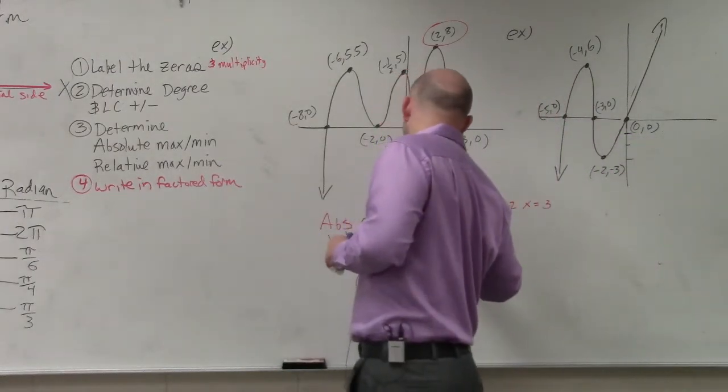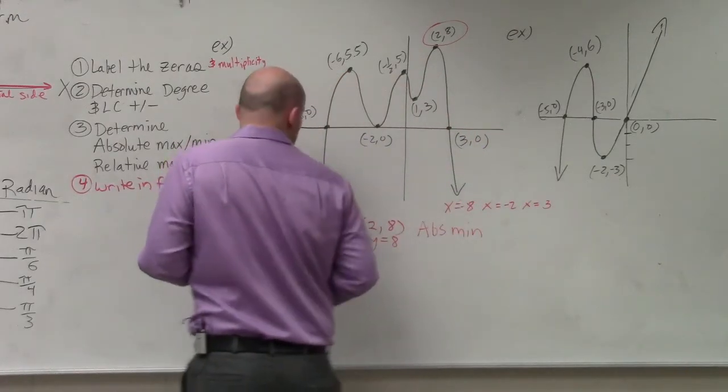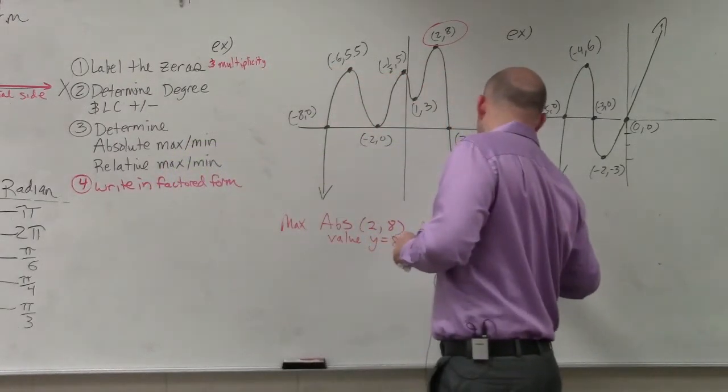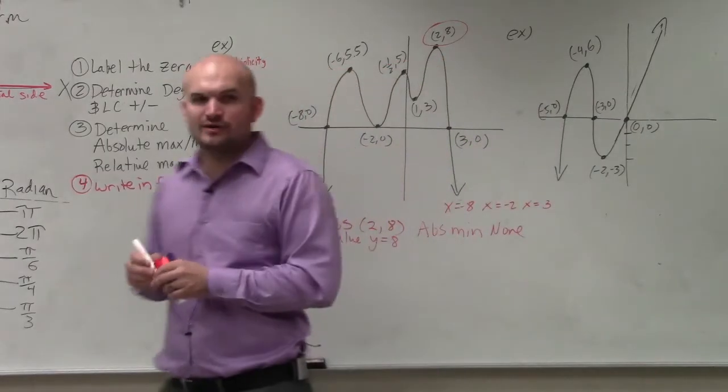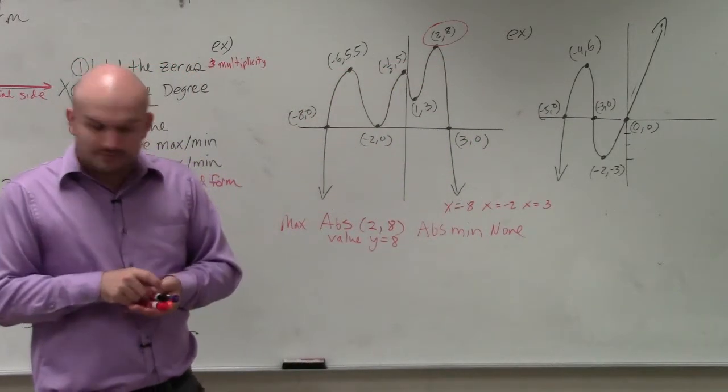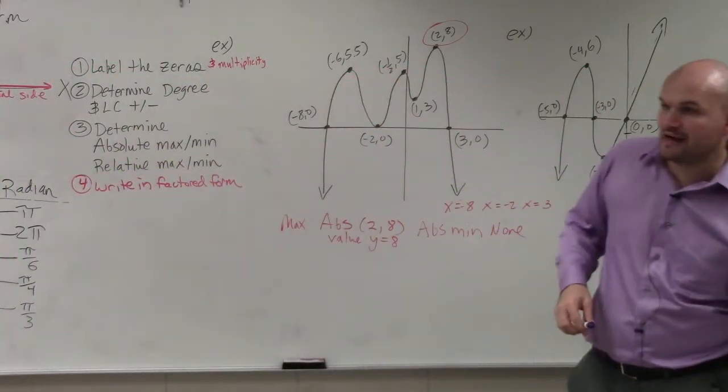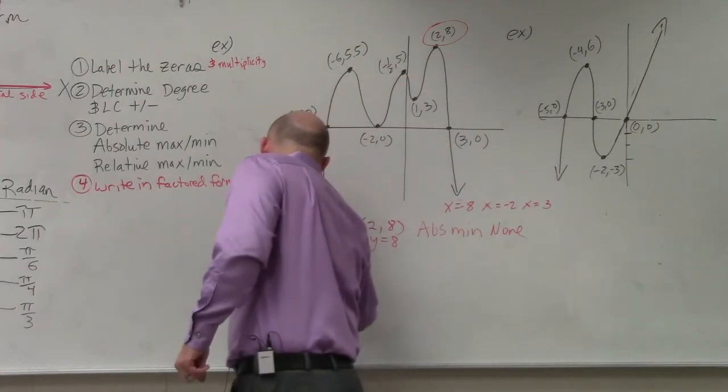So the absolute min, I should have wrote that. That's max. Absolute min is none. There is no absolute min. It's going to go down to negative infinity. So there is no absolute minimum. It's not necessarily an absolute minimum. You're just going to say there is no absolute minimum. But then we can talk about relative.